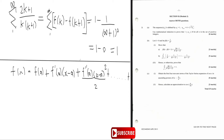Now that we have the Taylor series formula, the question wants us to use f of x equals cos x and write it in ascending powers of x minus pi by four. So a equals pi by four and f of x equals cos x.